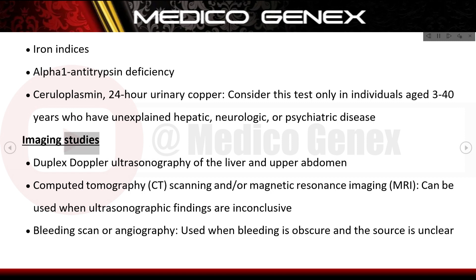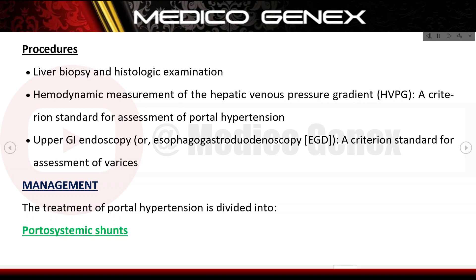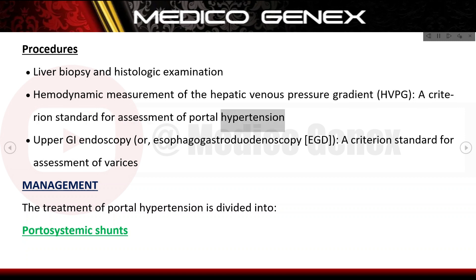Imaging studies include duplex Doppler ultrasonography of the liver and upper abdomen, computed tomography (CT) scanning, and/or magnetic resonance imaging (MRI), which can be used when ultrasonographic findings are inconclusive. A bleeding scan or angiography is used when bleeding is obscure and the source is unclear. Procedures include liver biopsy and histologic examination, hemodynamic measurement of the HVPG as a criterion standard for portal hypertension assessment, and upper GI endoscopy or esophagogastroduodenoscopy (EGD) as a criterion standard for assessment of varices.